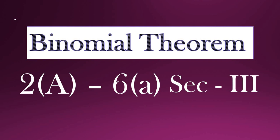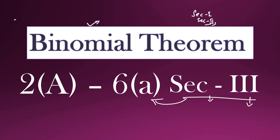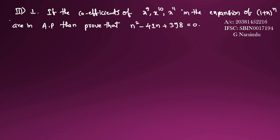Hello students, welcome back to Practice Math. Today's video covers the Binomial Theorem chapter, Section 3. Sections 1 and 2 have already been uploaded — please go through those videos first. In this section, the first question states: if the coefficients of x⁹, x¹⁰, and x¹¹ in the expansion of (1+x)^n are in AP, prove that n²-41n+398=0.